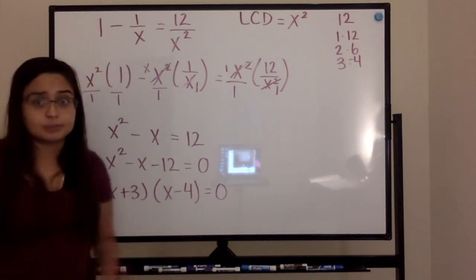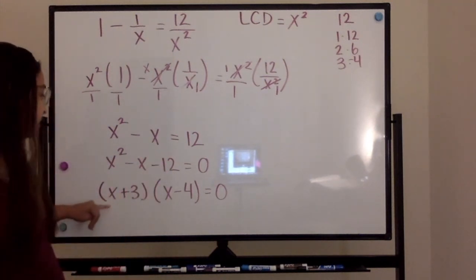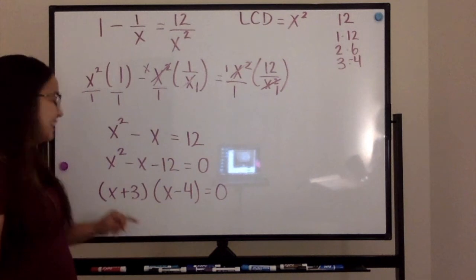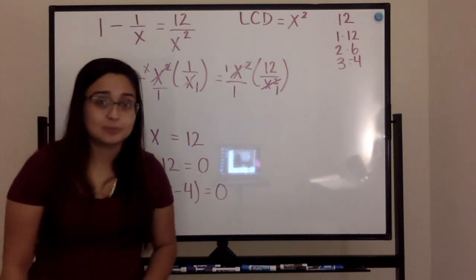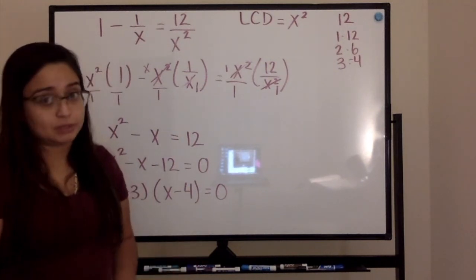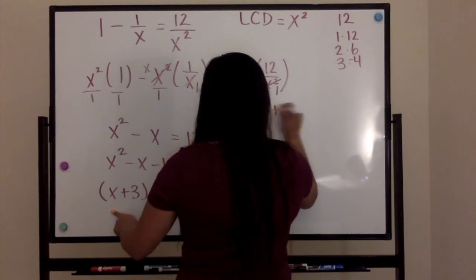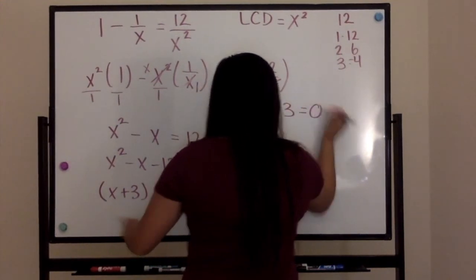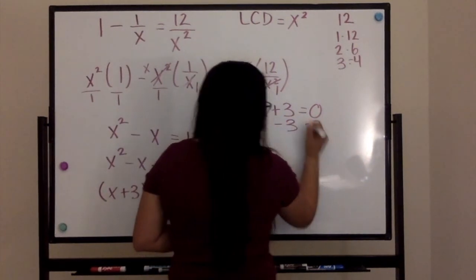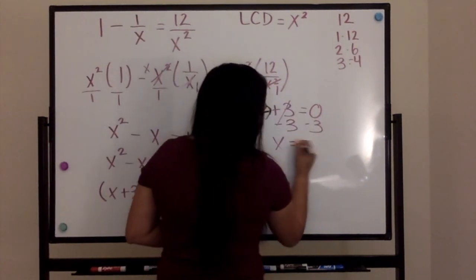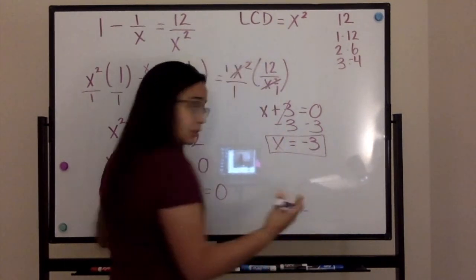Now this is going to give me two possible values for x. How do I know that? I'm going to take each one of these and find the possible value for x by having them equal zero. So first I'm going to take my x plus three. And I need to get my x alone. It's positive three. So I need to subtract three to both sides. x is equal to negative three. This is one of my possible values for x.